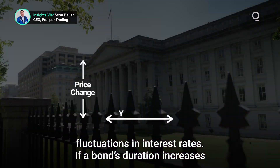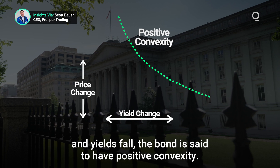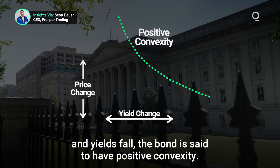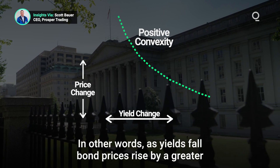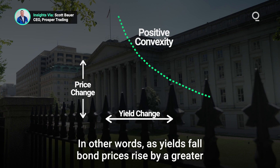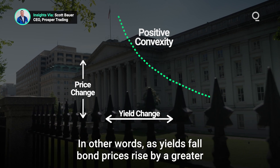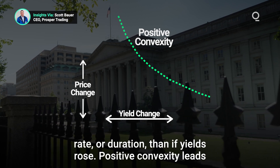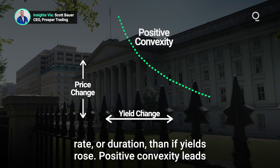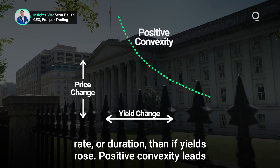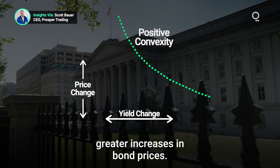If a bond's duration increases and yields fall, the bond is said to have positive convexity. In other words, as yields fall, bond prices rise by a greater rate or duration than if yields rose. Positive convexity leads to greater increases in bond prices.